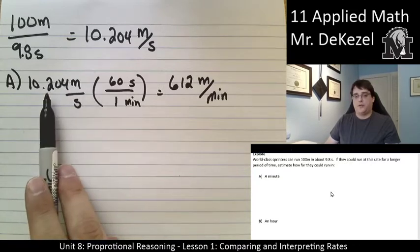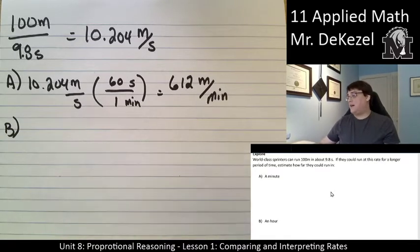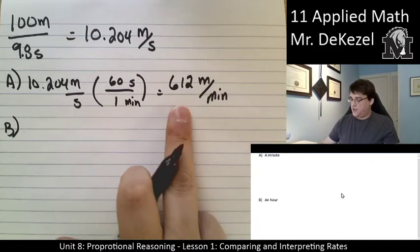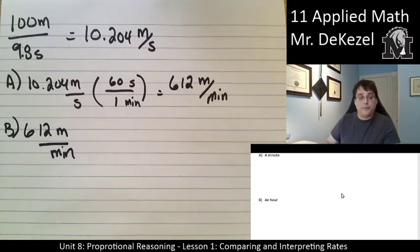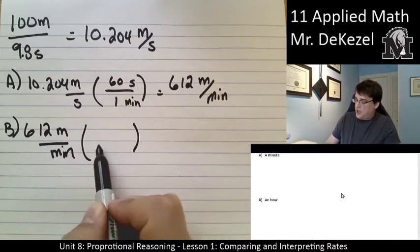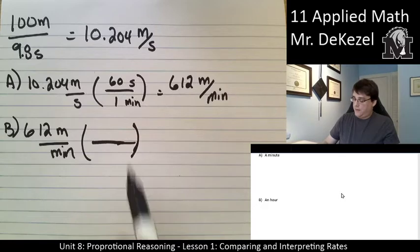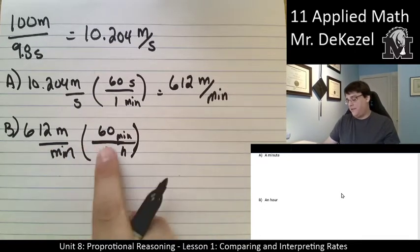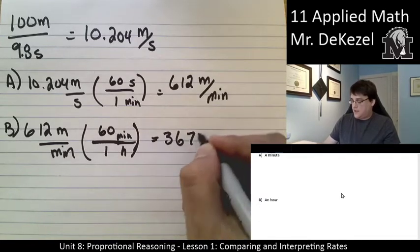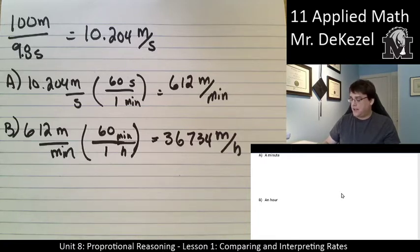That number is larger — in more seconds you can run more meters. So that's 612 meters per minute. Question B asks how far they could run in an hour. I take 612 meters per minute, and since there are 60 minutes in one hour, I multiply 612 by 60, which gets us 36,720 meters per hour. Obviously that's not possible for a whole hour, but theoretically that's how far the sprinter would go.